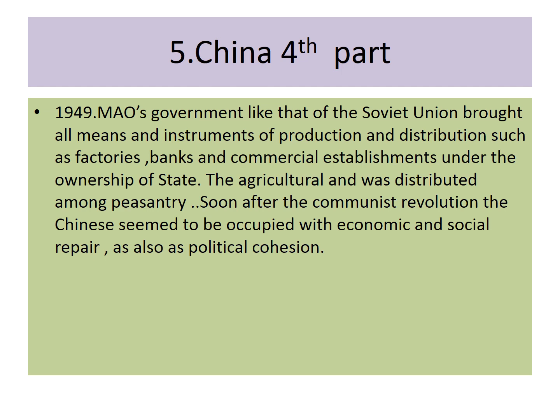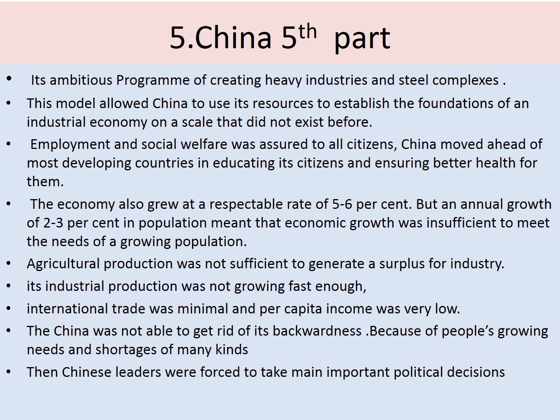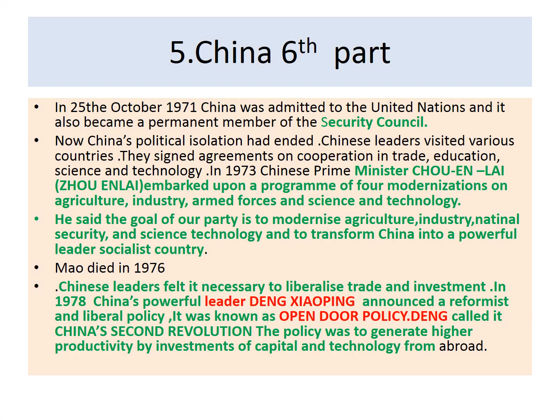The economy grew at a respectable rate of 5–6%, but annual population growth of 2–3% meant that economic growth was insufficient to meet the needs of a growing population. Agricultural production was not sufficient to generate a surplus for industry, and international trade was minimal with very low per capita income. China was not able to get rid of its backwardness, so Chinese leaders were forced to take many important political decisions. In October 1971, China was admitted to the United Nations and became a permanent member of the Security Council.